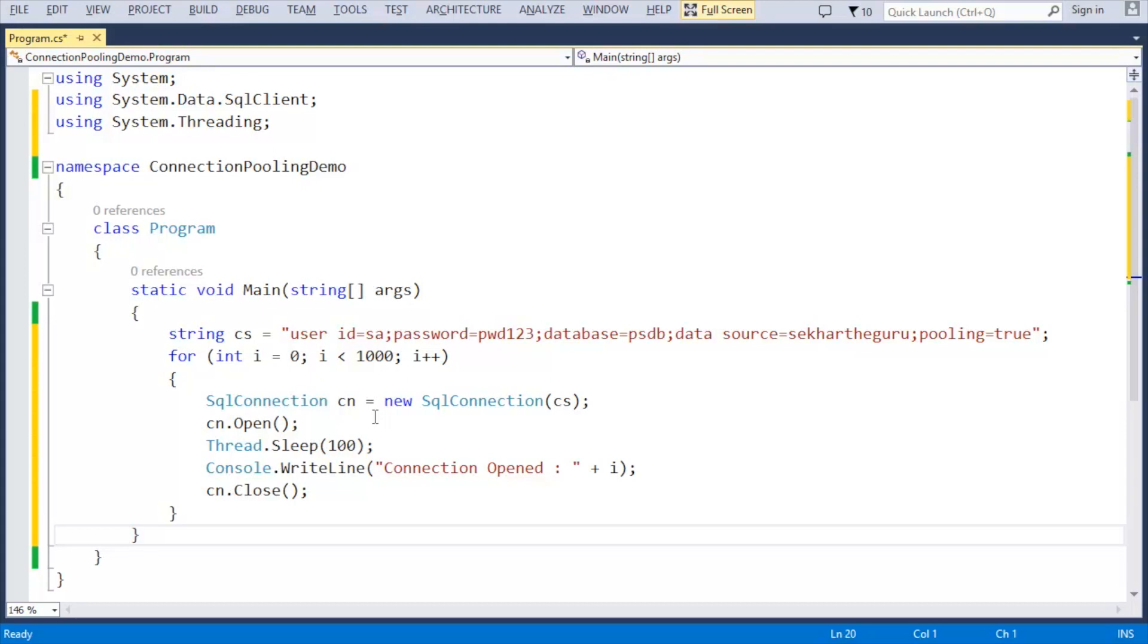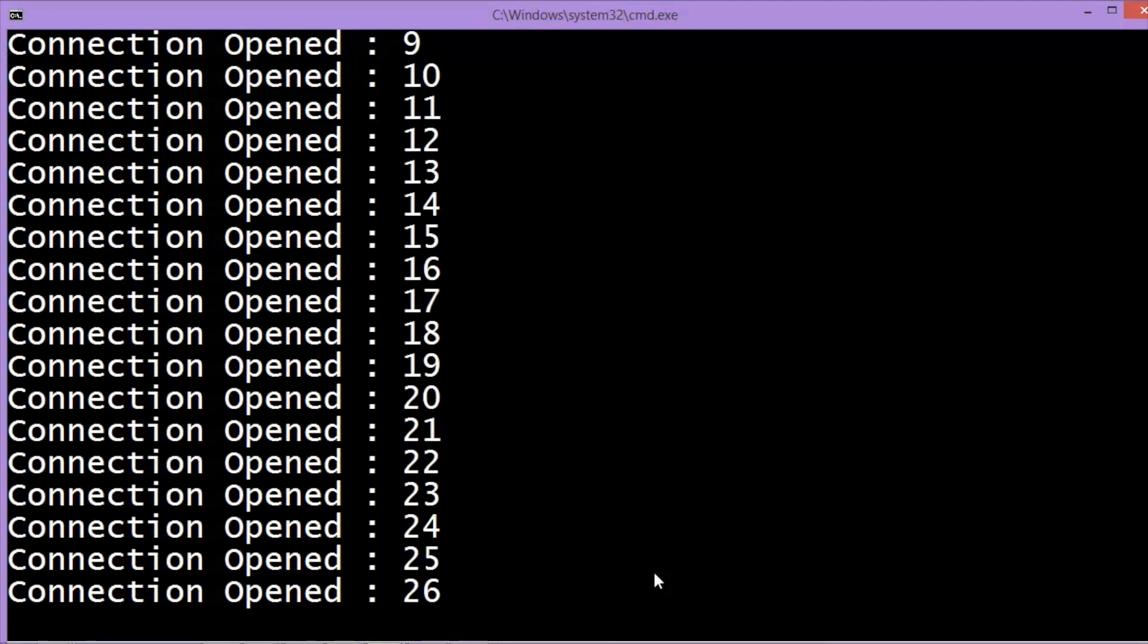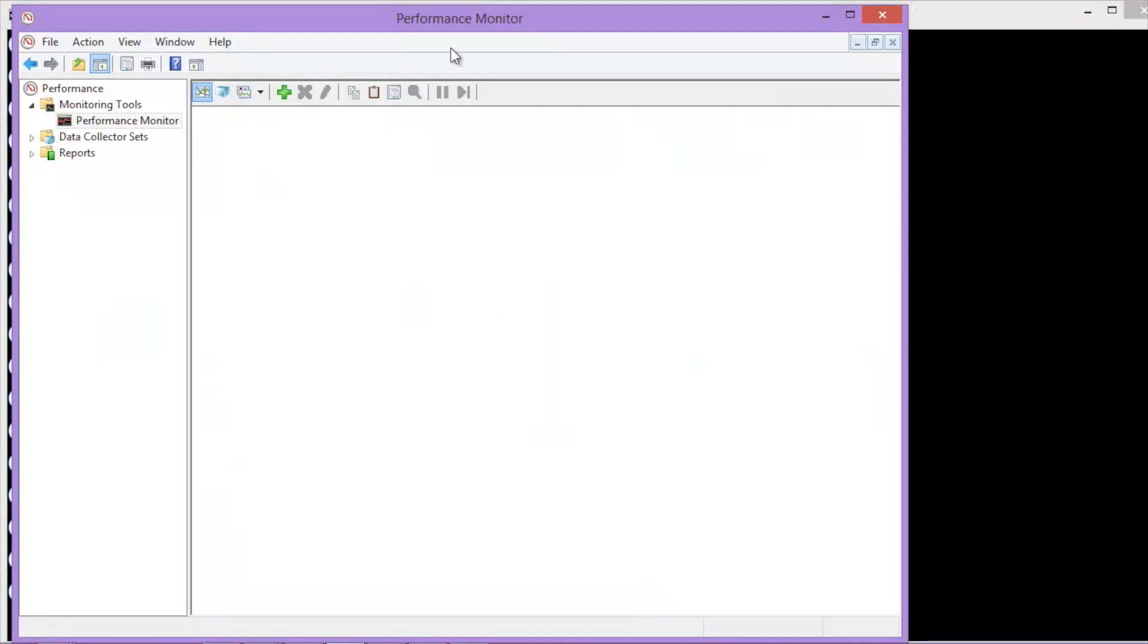Within the loop, I have just created an object for the connection, open the connection and close the connection object. Let us now execute the application. To understand how the connection pooling works, let me open the performance monitor.